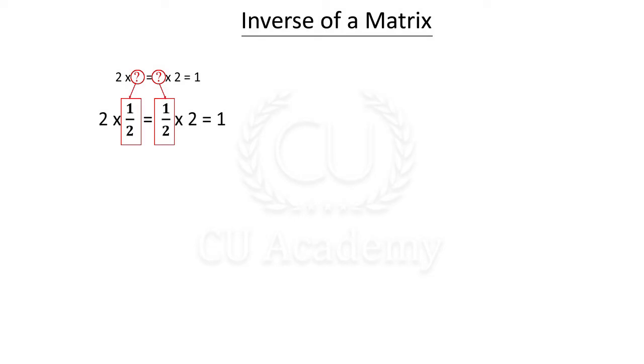2 reciprocally 1 by 2. 3 reciprocally 1 by 3. 4 reciprocally 1 by 4. And so on. Now we get the reciprocal. 2 times 1 by 2 is equal to 1. That's how 1 by 2 into 2 is equal to 1. So how do we get the answer? The answer is the multiple.